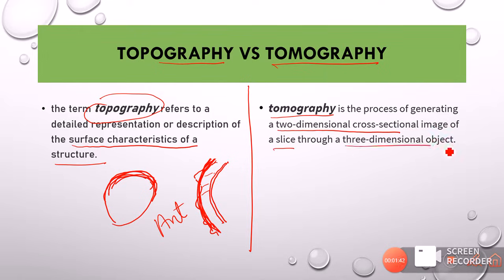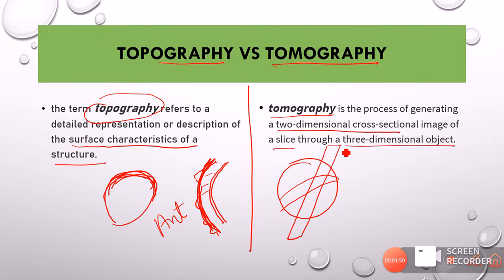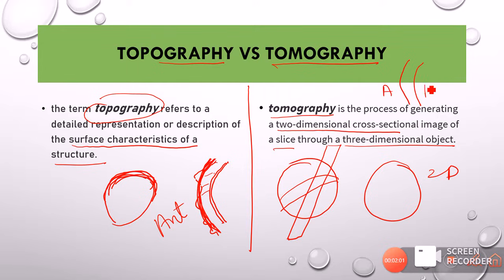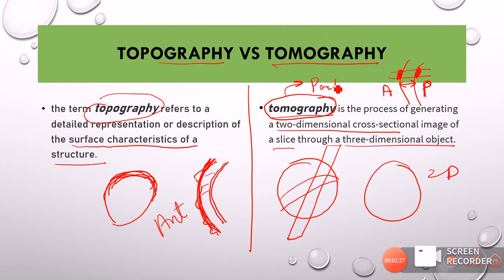Tomography, however, is a process of generating two-dimensional cross-sectional images of a slice through a three-dimensional object. If we have a ball and take a slice through it and look at the 2D image, that is tomography. For the cornea, taking a slice through it allows us to see not just the anterior surface but also the posterior surface, and we can find out the thickness of the cornea by studying the distances between anterior and posterior surfaces. So tomography gives us an important parameter: pachymetry.